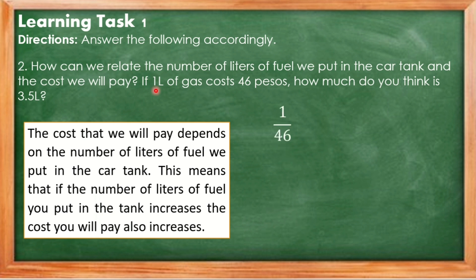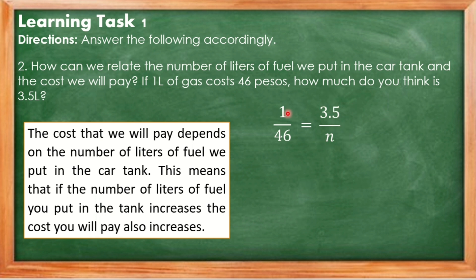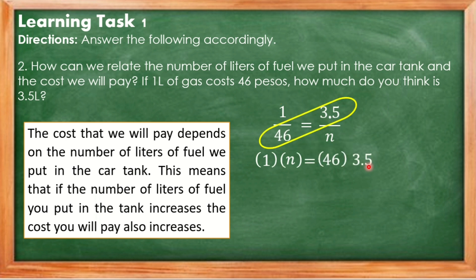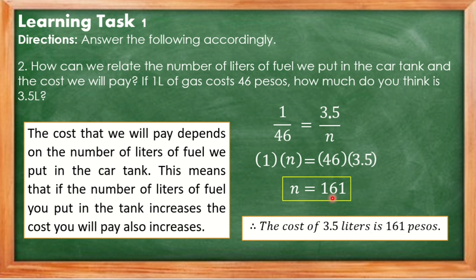To solve, we set up the proportion: 1 liter is to 46 pesos as 3.5 liters is to N. Note that ratios cannot be flipped — if liters is in the numerator of the first ratio, liters must also be in the numerator of the second ratio. Cross multiplying: 1 times N equals N, and 46 times 3.5 equals 161. Therefore, the cost of 3.5 liters is 161 pesos.